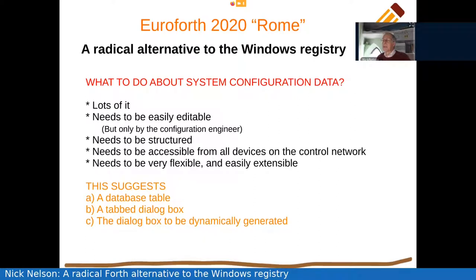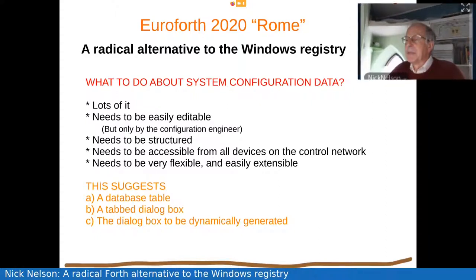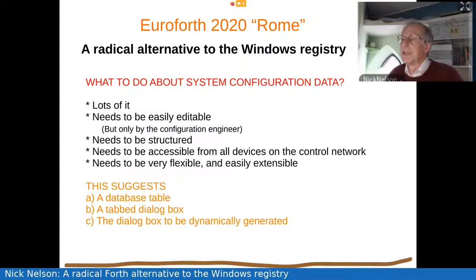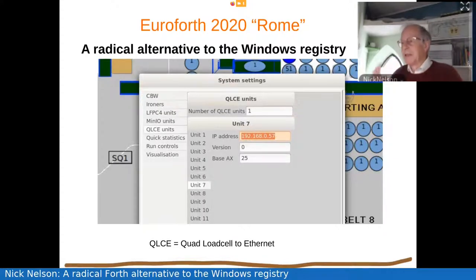But what are we going to do about system configuration data? There's a huge amount of it. It needs to be easily editable, although in practice it's only edited by the configuration engineer — one of our own people getting the system installed. It needs to be very structured. A lot of this data needs to be accessible from a wide variety of devices all over the control network. It needs to be very flexible, and when we come across a new thing to automate, we need to be able to extend it easily. All this suggests the data needs to go in a database table, edited with a structured tabbed dialog box that is dynamically created because the data being edited is variable. And this is what a typical tab setting on the system settings editing dialog looks like — a double-layered tab.